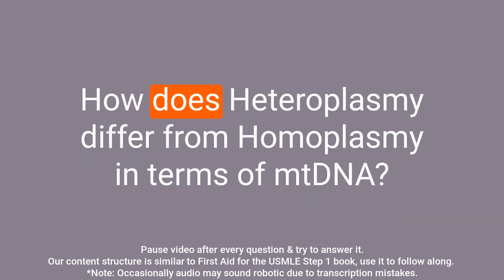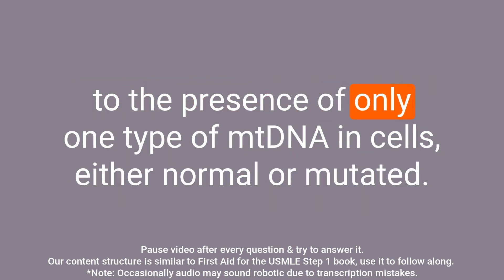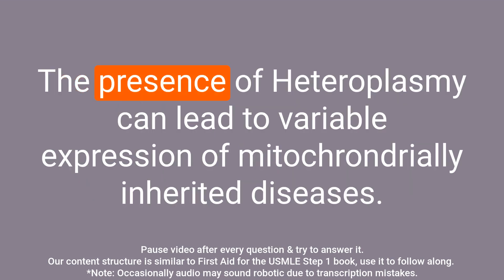Question: How does heteroplasmy differ from homoplasmy in terms of mtDNA? Answer: Heteroplasmy refers to the presence of both normal and mutated mtDNA in cells, while homoplasmy refers to the presence of only one type of mtDNA in cells — either normal or mutated. The presence of heteroplasmy can lead to variable expression of mitochondrially inherited diseases.